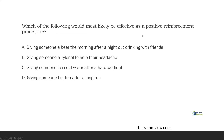Question six: which of the following would most likely be effective as a positive reinforcement procedure? My rule of thumb is that in order to be a positive reinforcement procedure, we have to look at how future behavior changes. This question says 'most likely,' so we're not guaranteeing it — we're saying most likely it will function as positive reinforcement, meaning we're clearly adding something to increase behavior. A — giving someone a beer the morning after a night out drinking. What happens to motivation for drinking the next morning? Typically the last thing you want is a beer, so giving a beer after a night out probably won't be very effective as positive reinforcement.